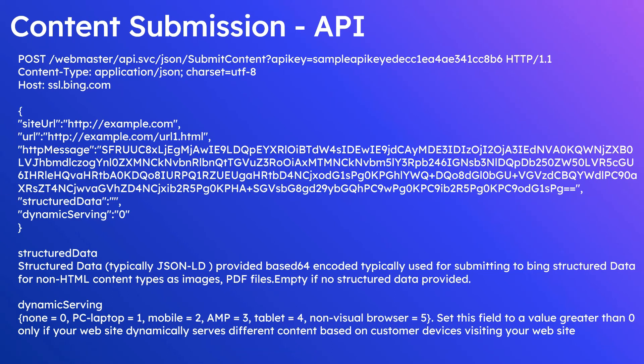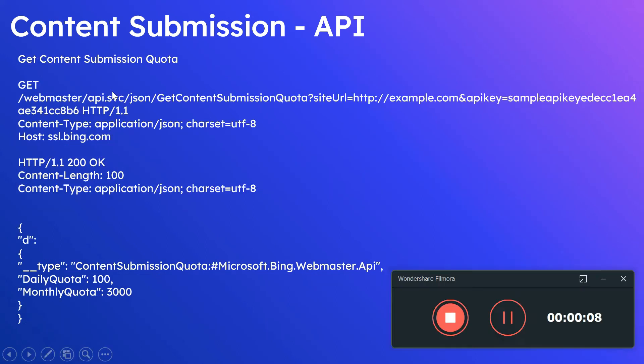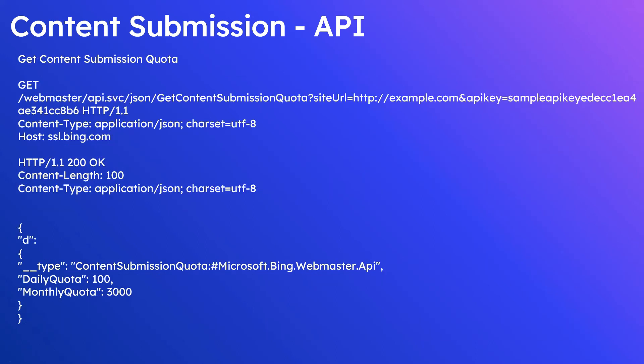The structured data field is for non-HTML content types such as images or PDF files, provided as base64-encoded data. Set the dynamic serving field to a value greater than zero only if your website dynamically serves different content based on the customer's device. The Content Submission API works based on your API quota; you can use the Get Content Submission Quota API, specifying the site URL and API key, which will respond with your daily and monthly quota.